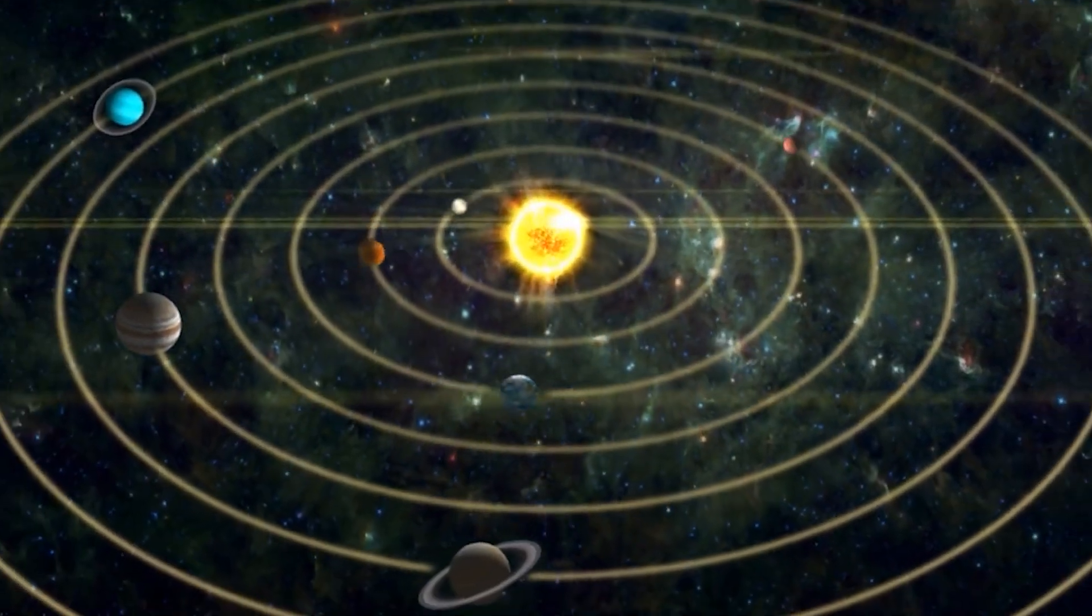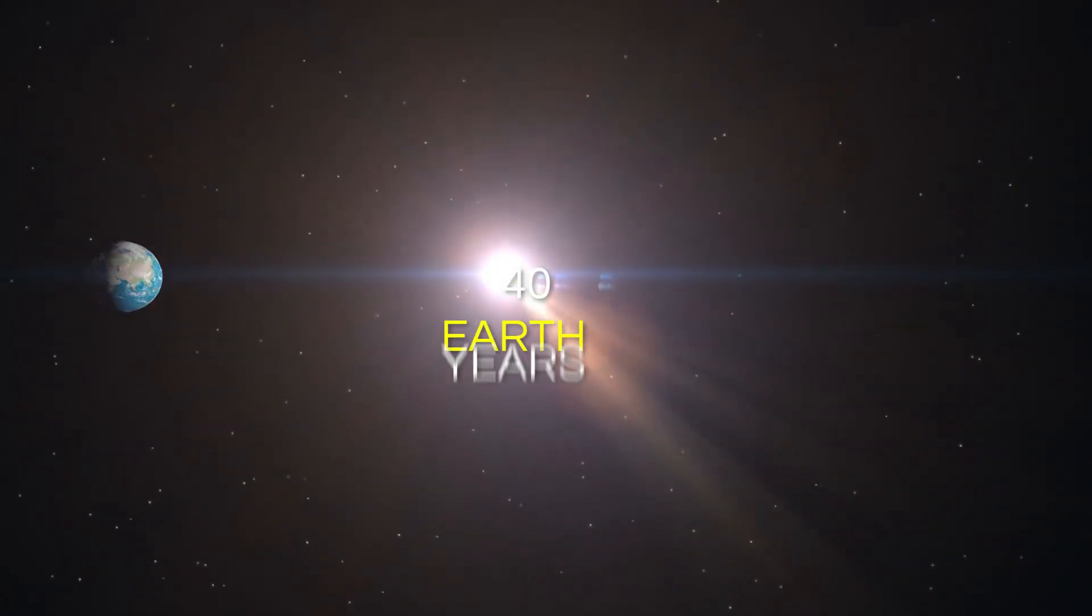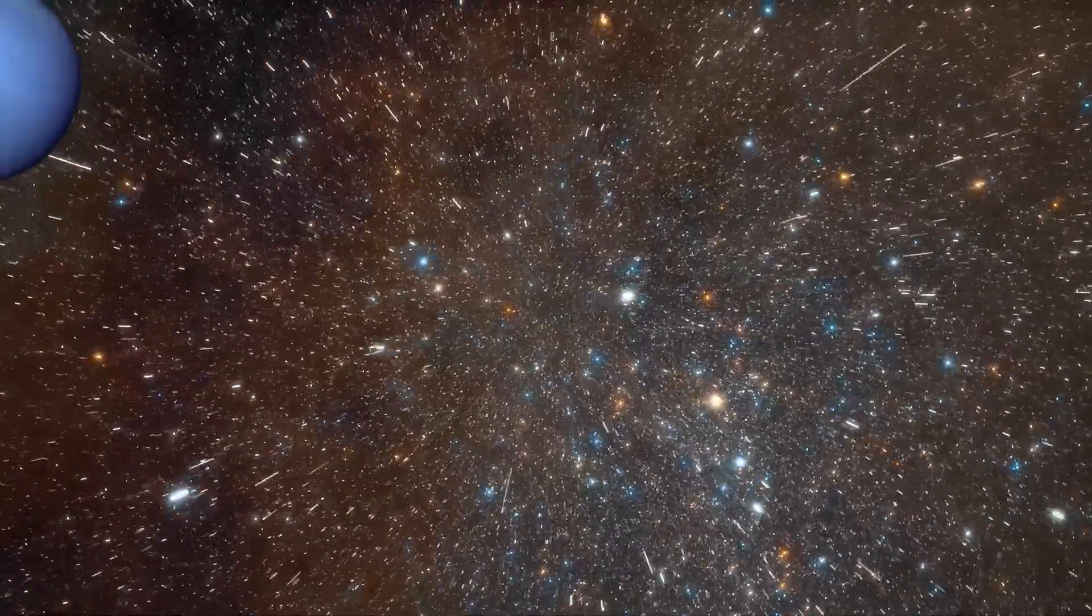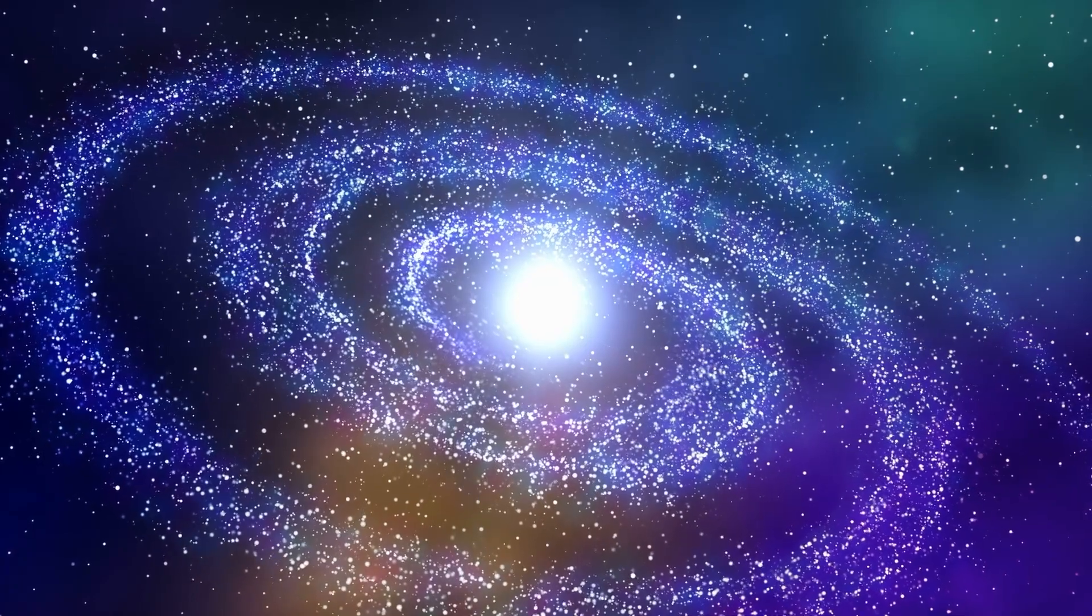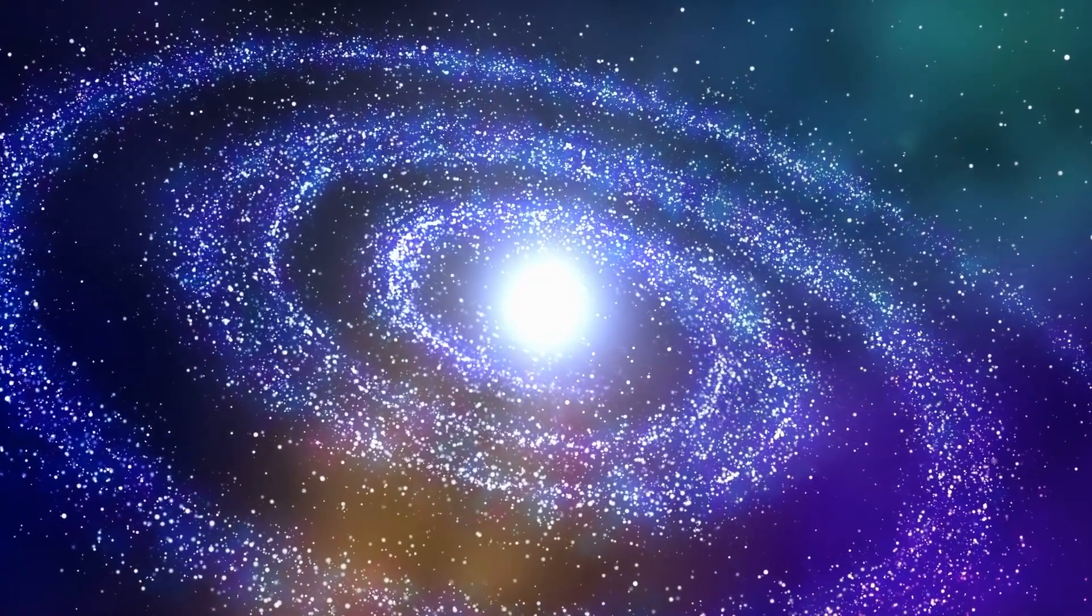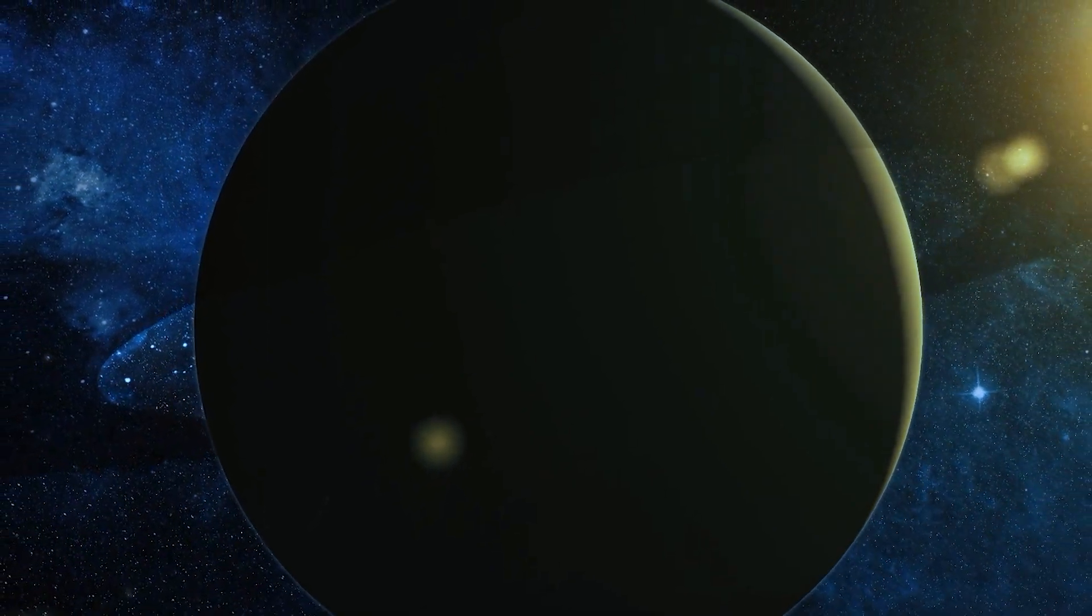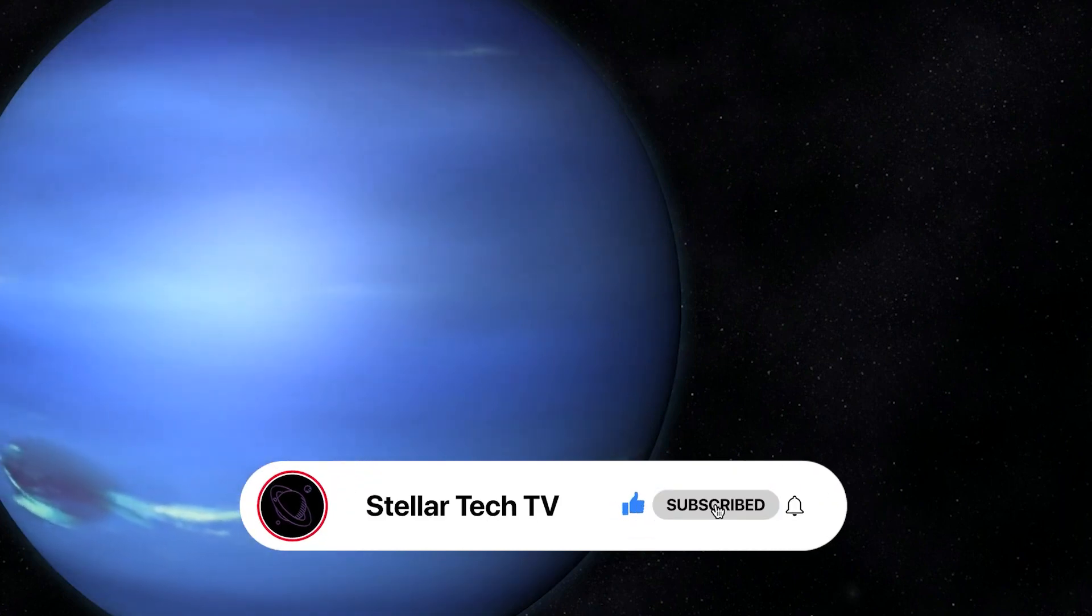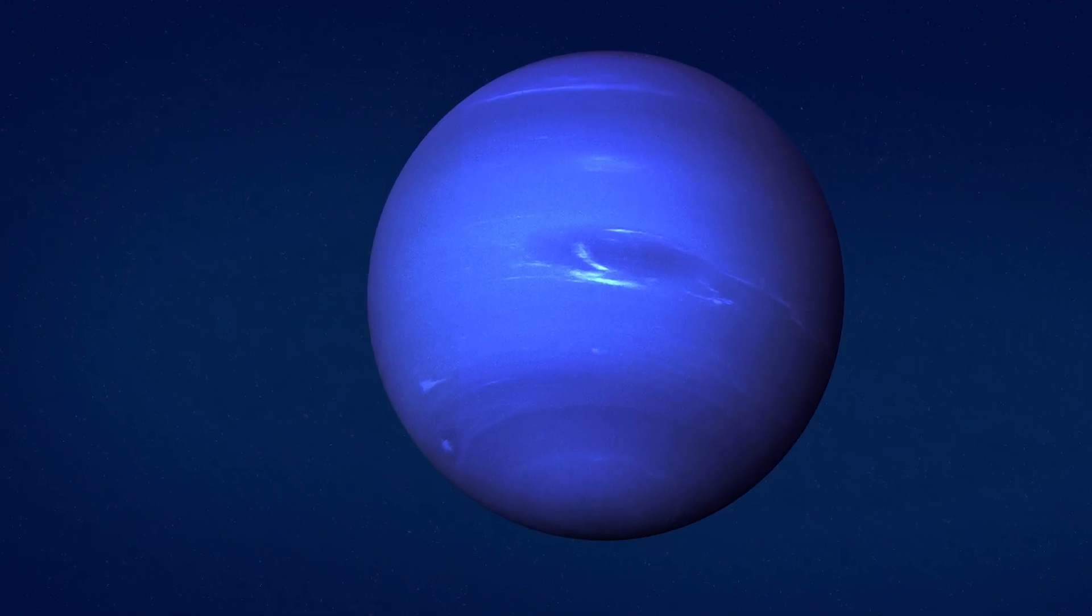It is within this enigmatic world, cloaked in perpetual seasons that span a staggering 40 Earth years, where tempestuous winds of unparalleled might roar to life, sculpting a celestial symphony unique to Neptune. As we journey deeper into the heart of this cosmic wonder, we shall unveil the awe-inspiring secrets of Neptune's superpowered winds and unravel the captivating composition of its atmosphere. An 80% hydrogen composition, interwoven with 19% helium, and a tantalizing 1% of other gases, including the enigmatic presence of methane.